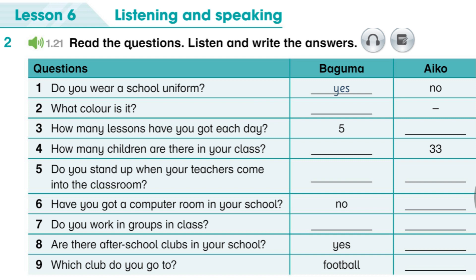Hi, I'm Aiko and I go to school in the countryside near Osaka, a big city in Japan. We don't have to wear a school uniform — we can wear our own clothes to school. We've got six lessons every day, four in the morning and two after lunch. There are 33 children in my class. When a teacher comes into the classroom we all stand up. There's a computer room at school and we do some of our lessons there. We use the internet to learn about different subjects.